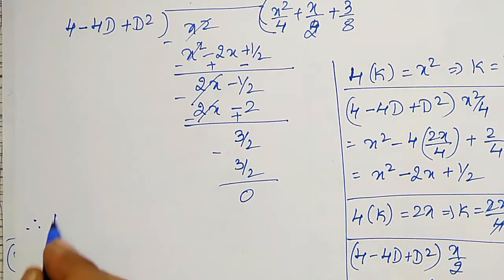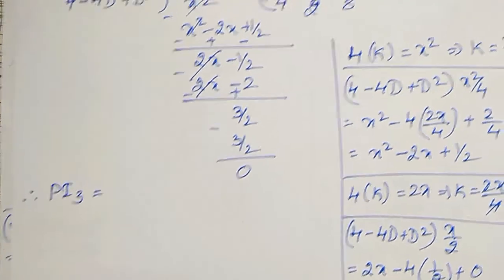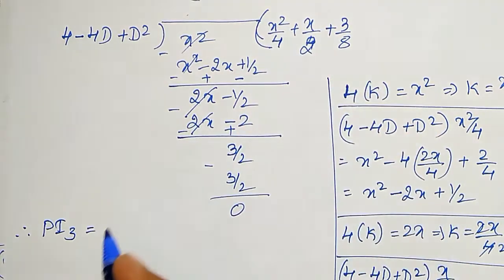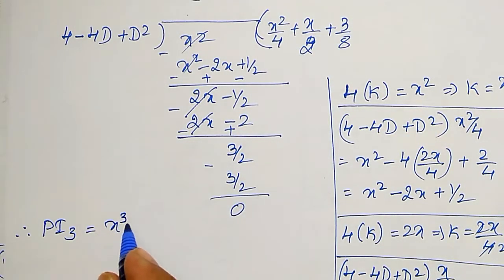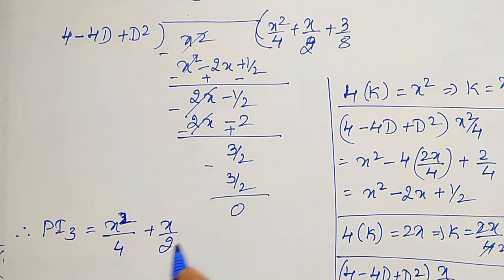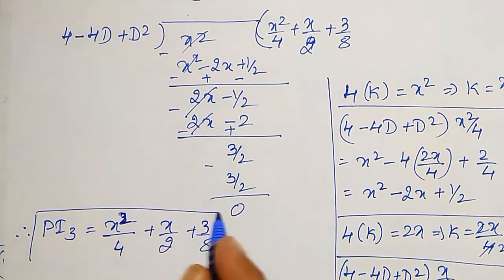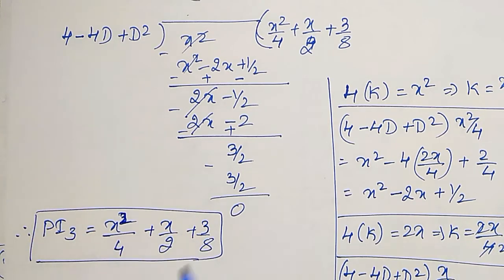Therefore, PI3 is nothing but the quotient: x squared by 4 plus x by 2 plus 3 by 8.